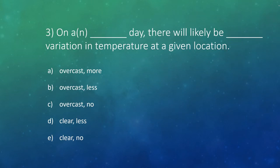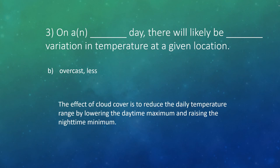Question three: on a blank day, there will likely be blank variation in temperature at a given location. The answer is: on an overcast day, there will likely be less variation in temperature at a given location. Alright, as always, thanks for watching, and have a great day.